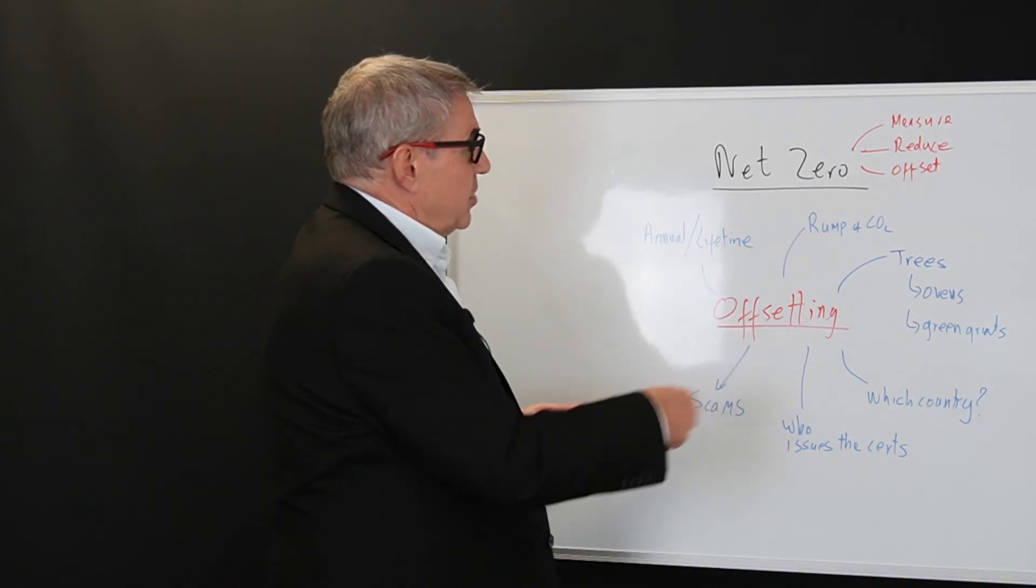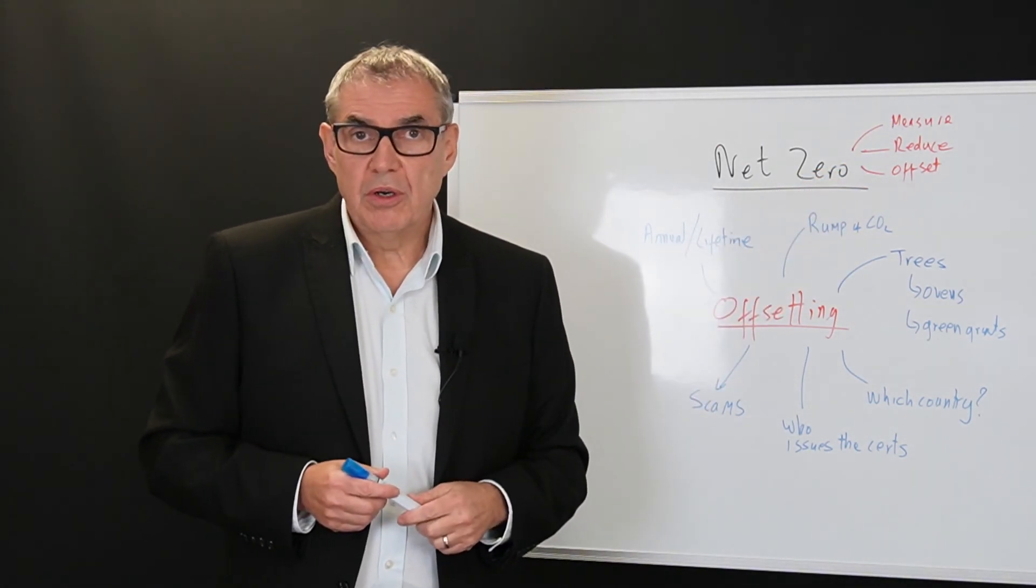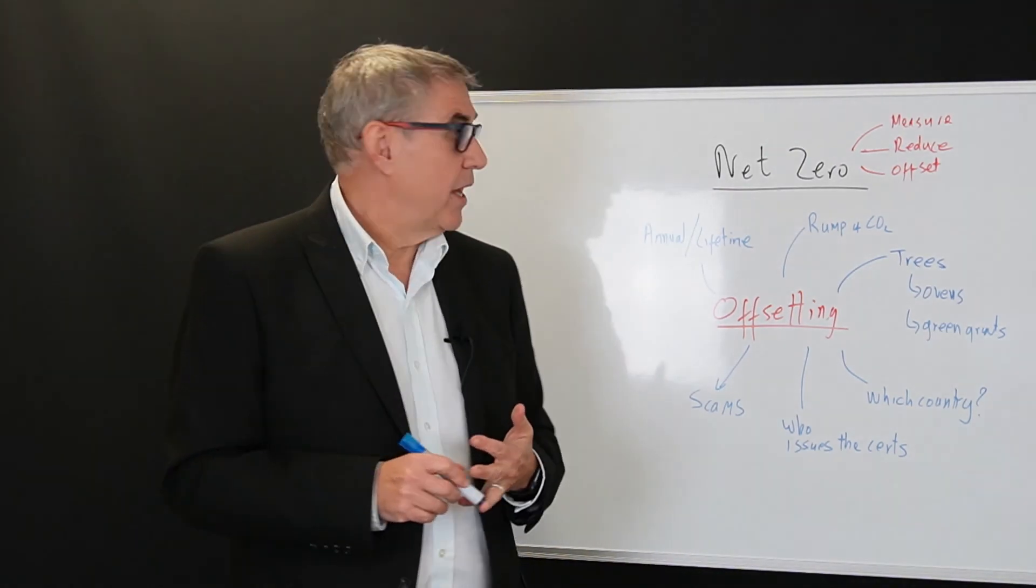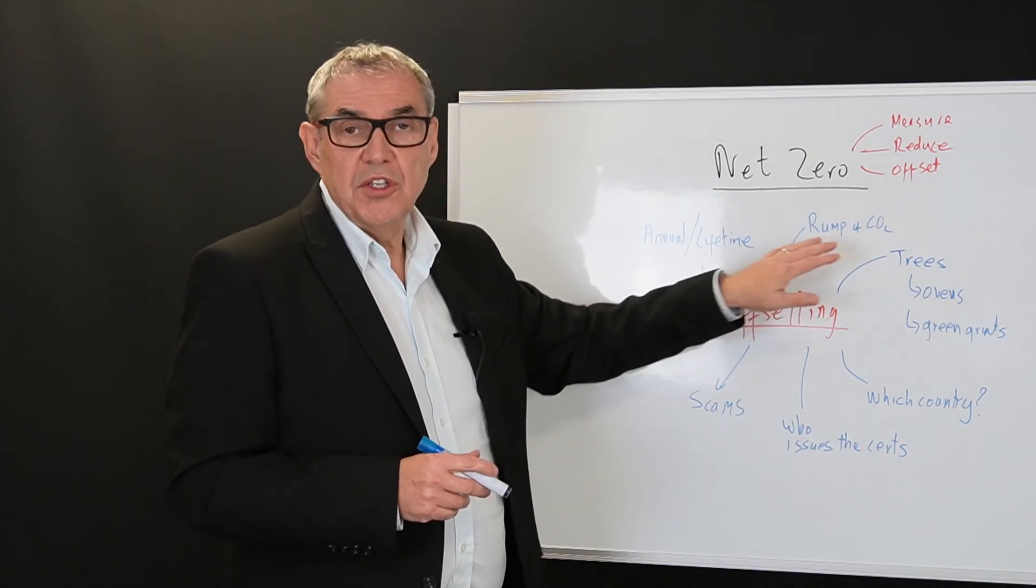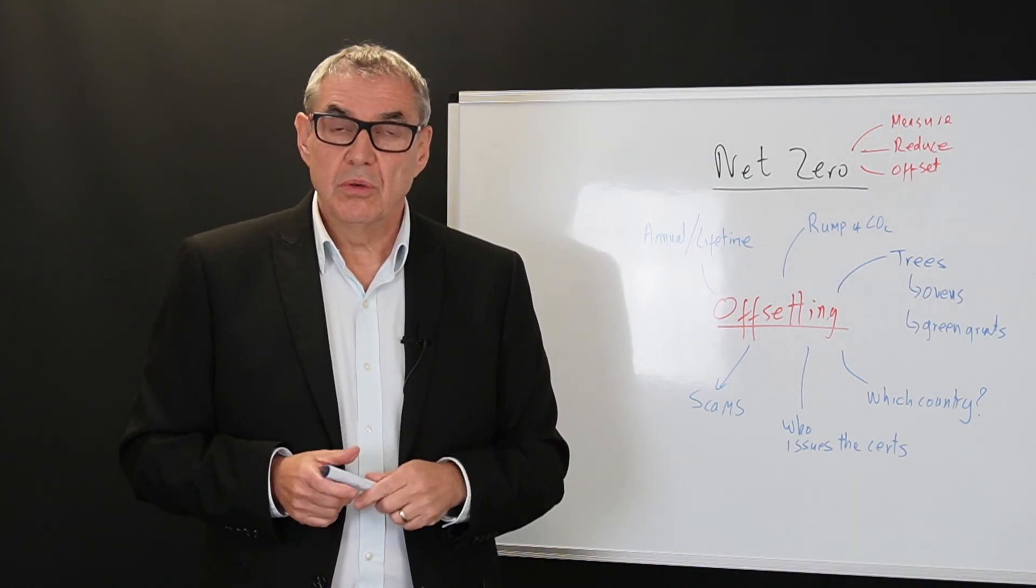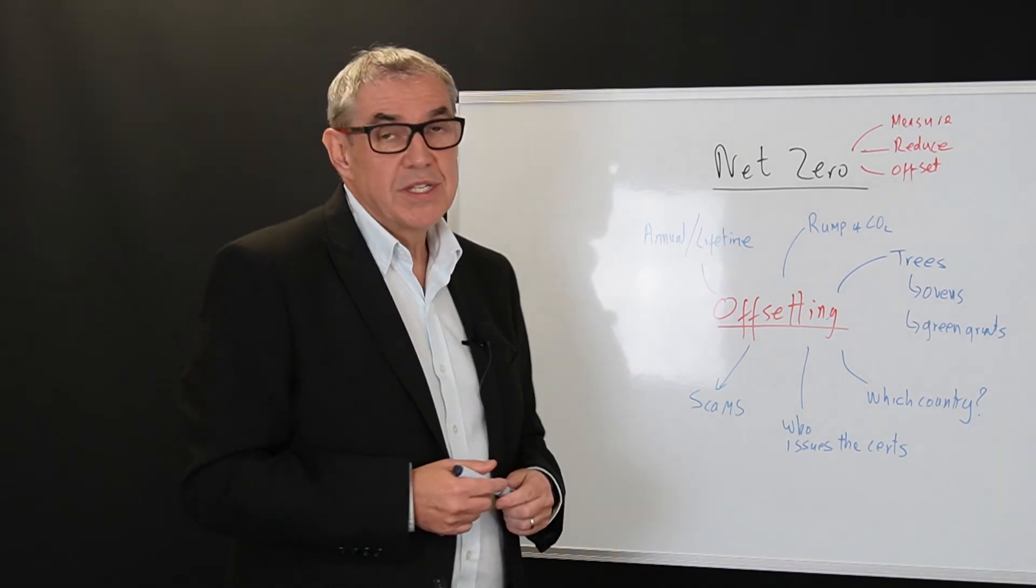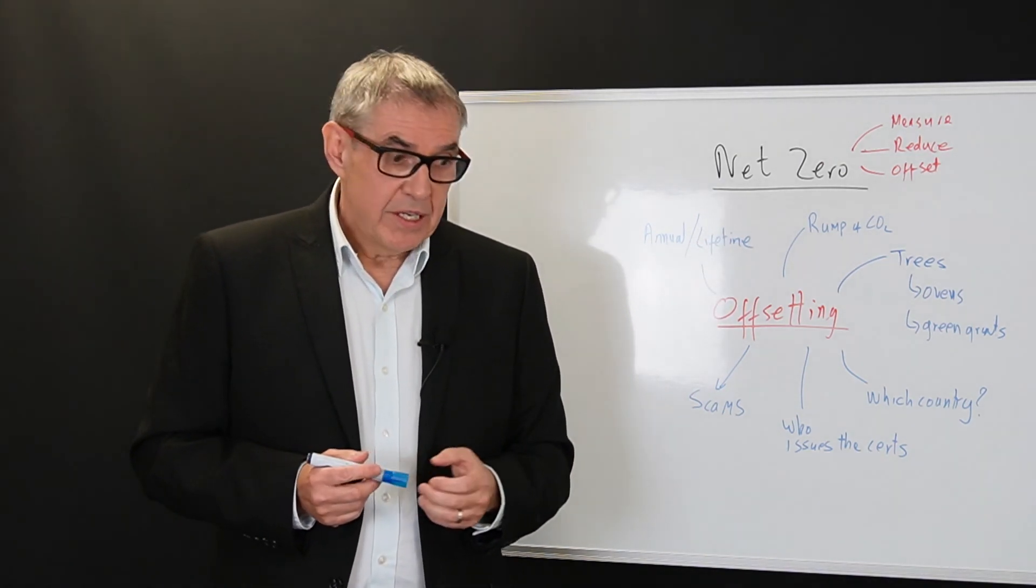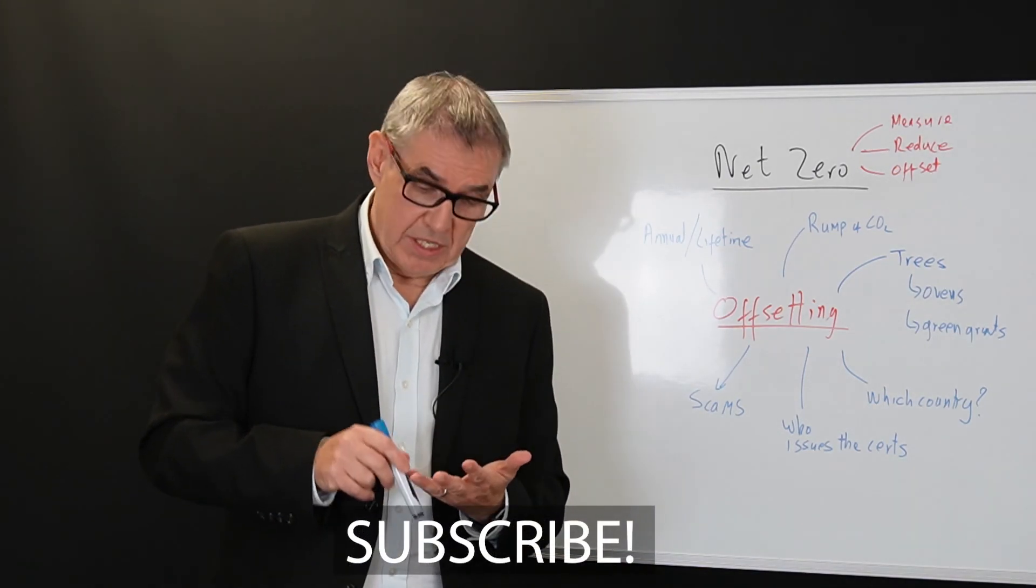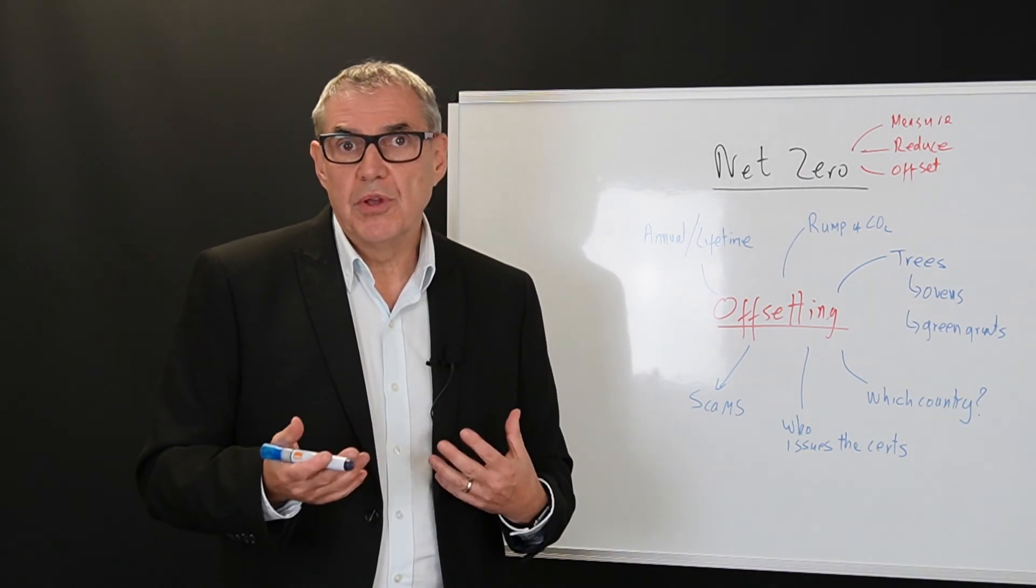So look, that's net zero in three simple steps. First, you measure your carbon dioxide emissions. Step two, you reduce them down to as low as you possibly can. Step three, what's left, you offset either yourself or you pay someone else to plant trees on your behalf to lock in the carbon. That's net zero. That's what it means. I hope you found that useful. If you did and you like what we're doing, please click subscribe below. It genuinely helps us and there's other videos in this series to help you through this topic.